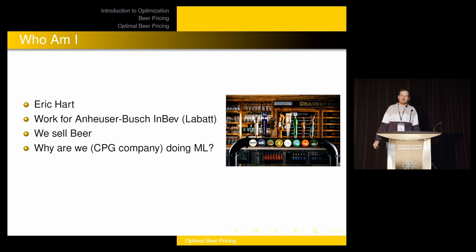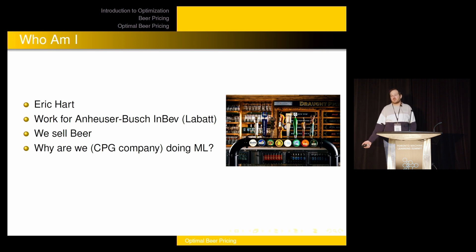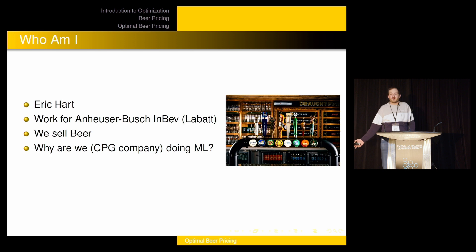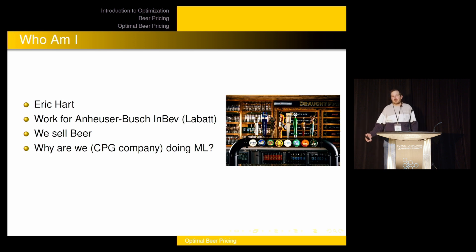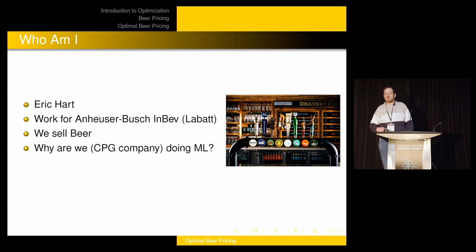A few years ago we looked around and said, we're spending a lot of money on vendors who are building products for us — sometimes software products, sometimes models. And every two or three years, we have to start again, because even if we're still employing those same vendors, the people who built those models have left and it's hard to level them up. So we started taking a build-don't-buy mentality, and now we're doing this sort of thing ourselves.